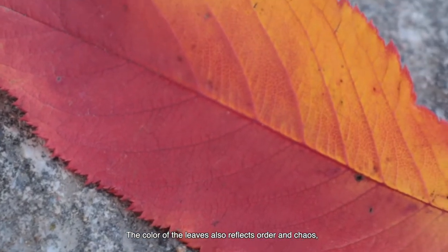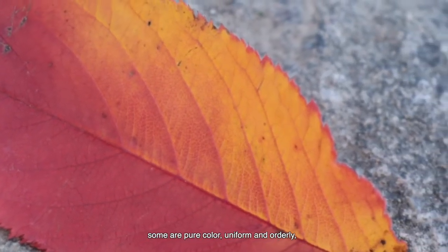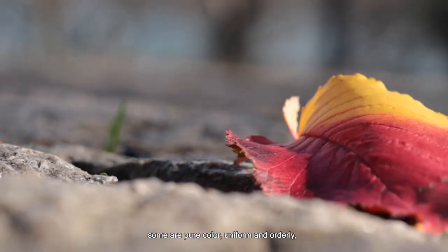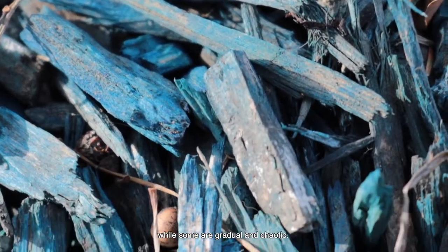The color of leaves also reflect order and chaos. Some are pure color, uniform and ordinary, while some are gradual and chaotic.